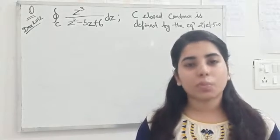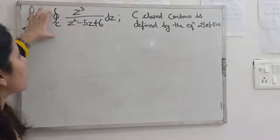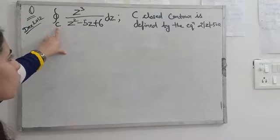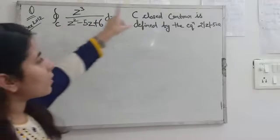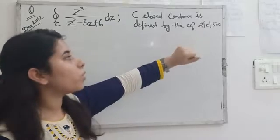The question is: we need to find this integration within the closed contour C, where C is defined by the equation 2|z - 5| = 0. The function is z³ / (z² - 5z + 6) dz.